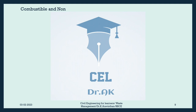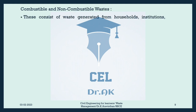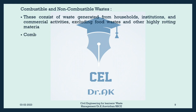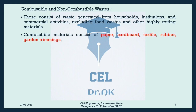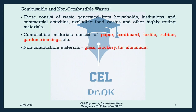Combustible and Noncombustible Wastes: These consist of waste generated from households, institutions, and commercial activities, excluding food wastes and other highly rotting materials. Combustible materials consist of paper, cardboard, textile, rubber, garden trimmings, etc. Noncombustible materials include glass, crockery, tin, aluminium cans, ferrous and non-ferrous materials, and dirt.